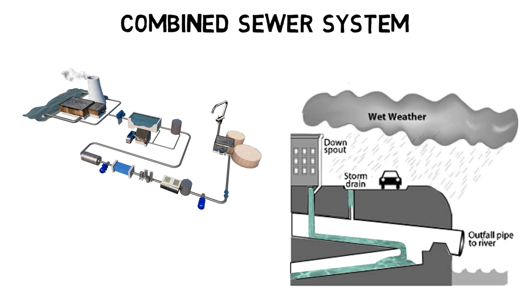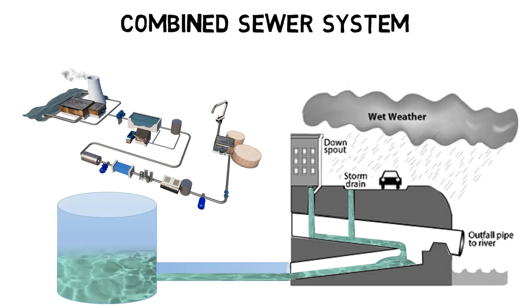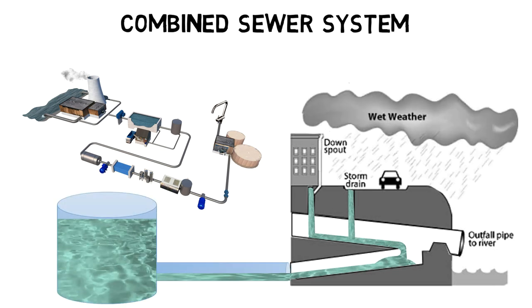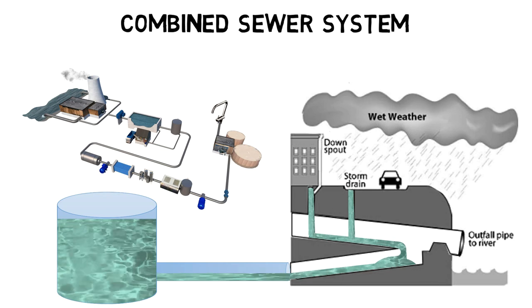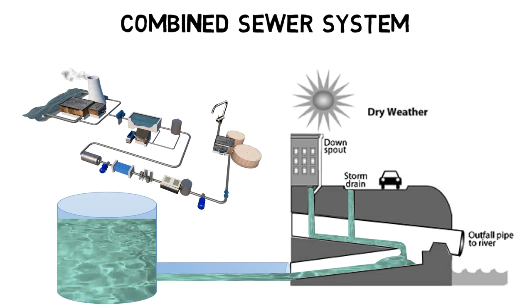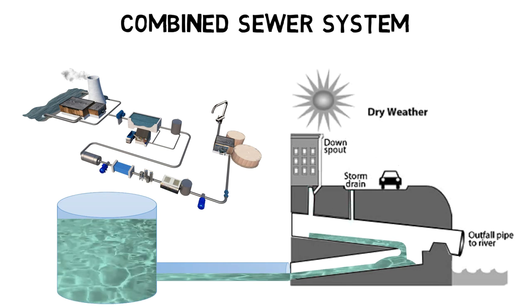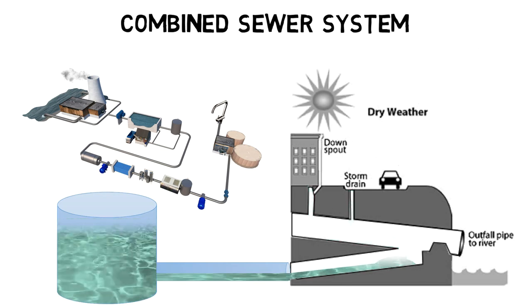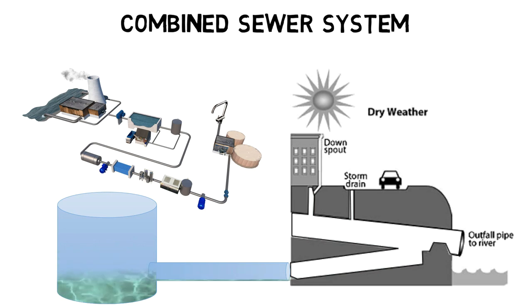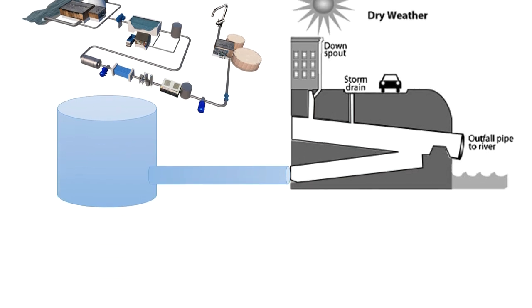Plants connected to a combined sewer system are very often equipped with retention basins that can store an equivalent of two to three days of rainfall. When the rainfall ends, the water is gradually released to the wastewater treatment plant.